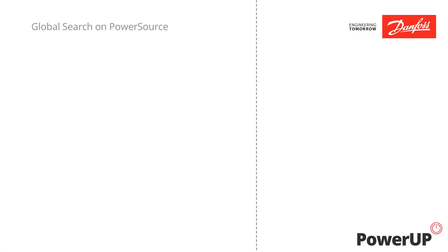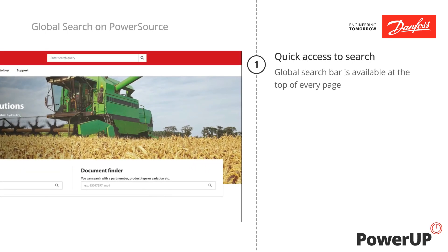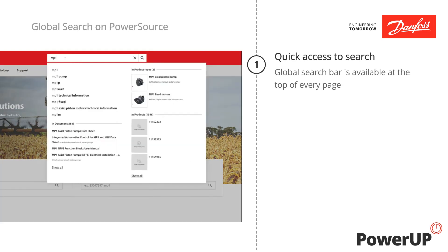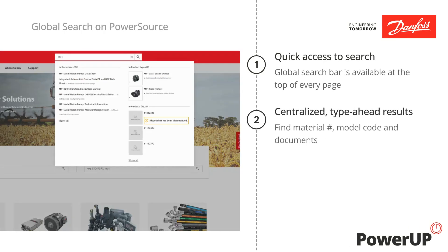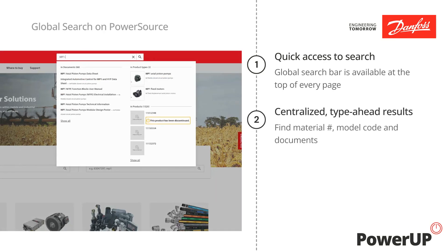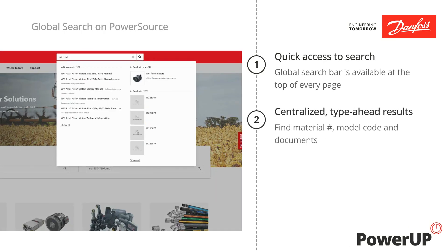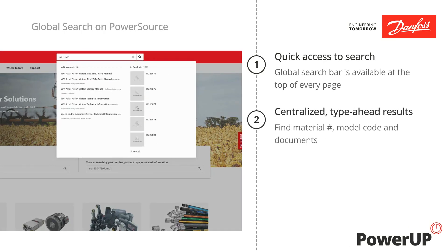There are a few things to understand about using PowerSource search. The global search bar can be found on the top of every page to access and find relevant information quickly. Find material numbers, replacement parts, model codes, and documents all in one place.